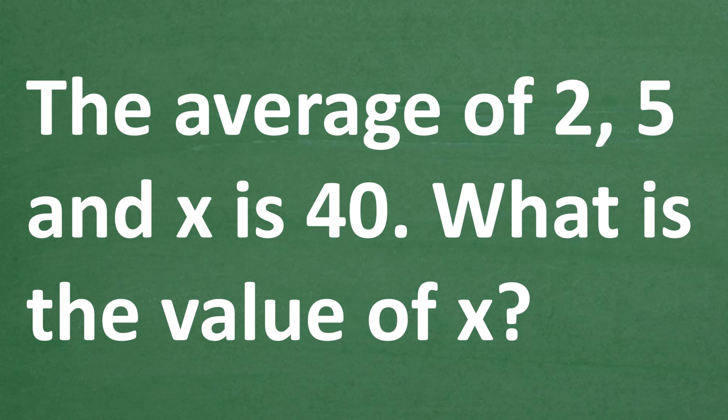If I gave you a few numbers, could you calculate the average of those numbers? I actually suspect that most of you could calculate the average, because most people understand the average. It's a term that we use all the time — the average of this, the average of that. But could you answer this question involving the average? The average of 2, 5, and x is 40. What is x equal to? Now, because x is what we call a variable, which just basically represents an unknown value, this is basically kind of like an algebra problem.